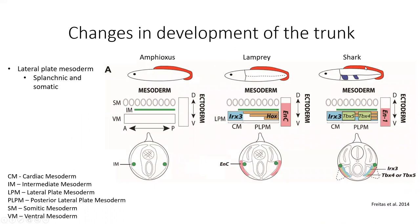Comparing amphioxus, lamprey, and shark: amphioxus doesn't really have lateral plate mesoderm. We start finding lateral plate mesoderm in the lamprey, and in the shark we have a good separation of splanchnic and somatic mesoderm. The trunk mesoderm is divided into splanchnic, which faces the alimentary canal, and somatic, which faces the ectoderm. This separation happens in the lamprey only in the cardiac mesoderm, but in the shark it happens in the posterior lateral plate mesoderm as well, in those areas where fins will form. Amphioxus lacks nested Hox gene expression, which we find in lamprey and shark.